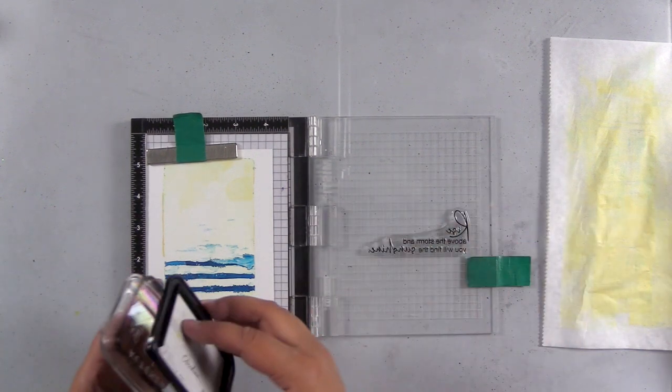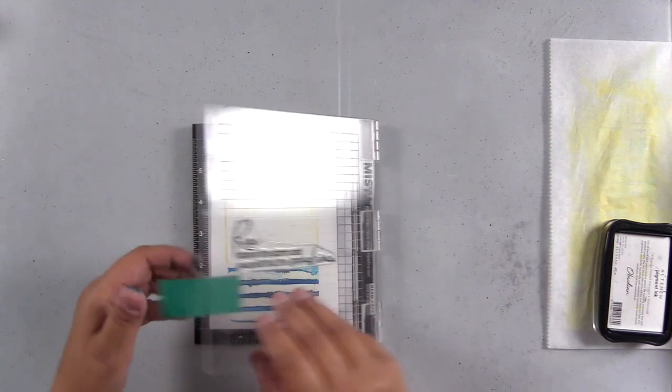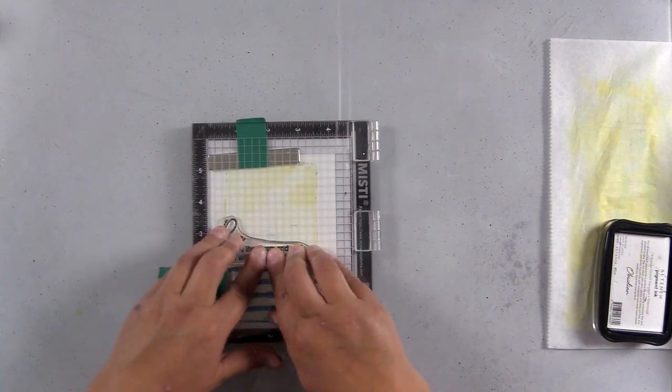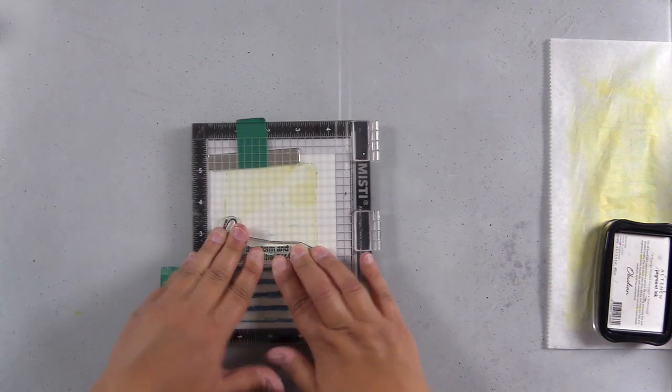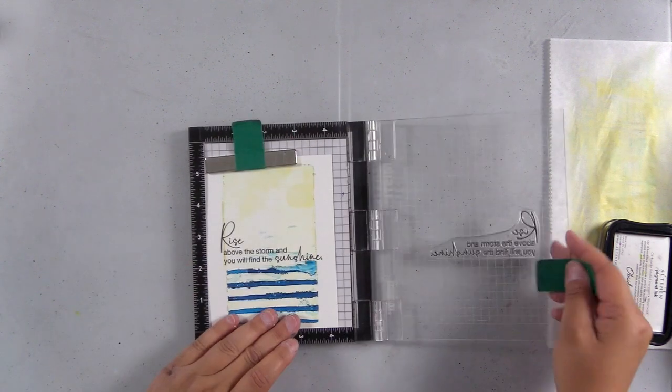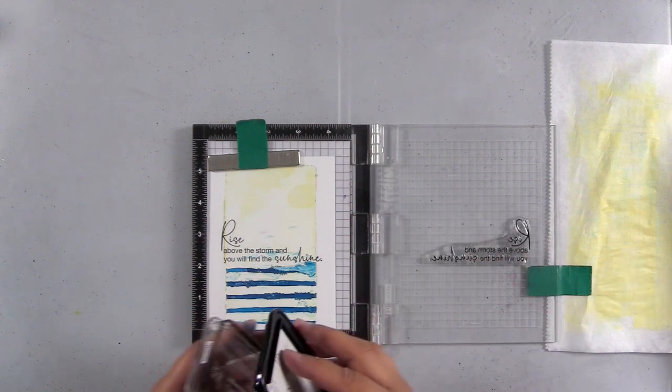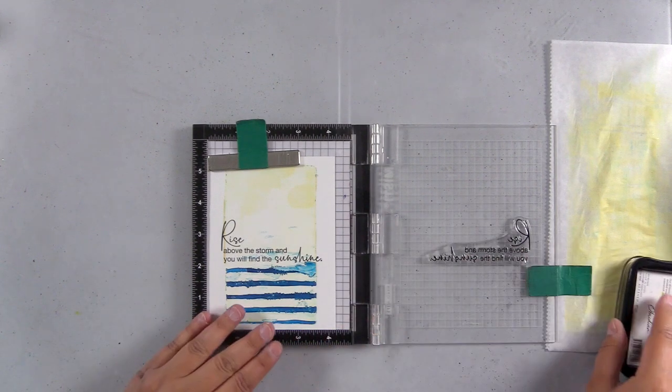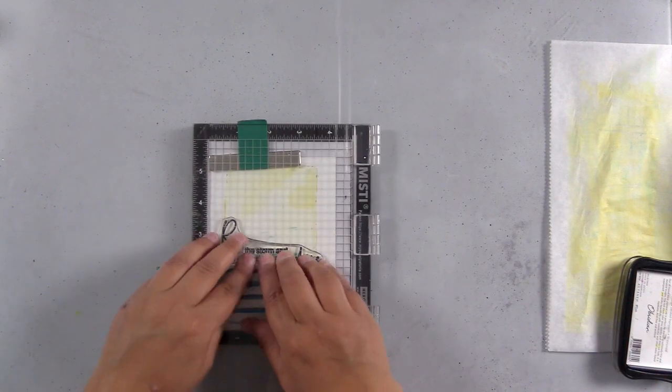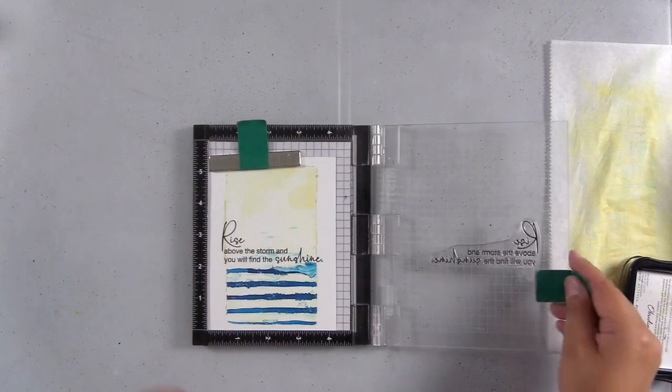This sentiment reads rise above the storm and you will find the sunshine. So this is going to be perfect. I'm going to put the sunflower up at the top. And this is a really nicely composed card, even though I didn't intend to create a storm or waves or anything like that at the bottom. I just happen to really like lines.